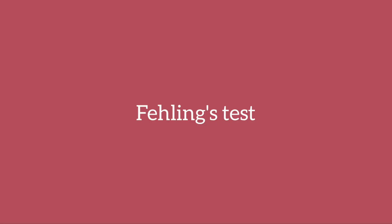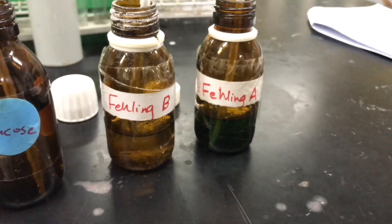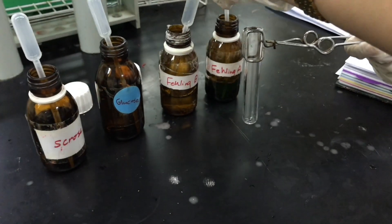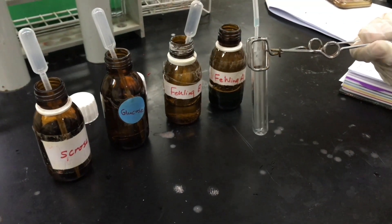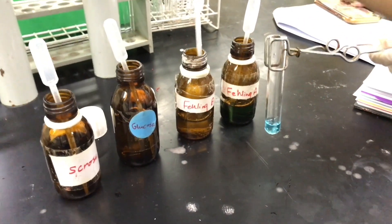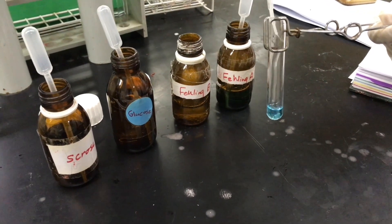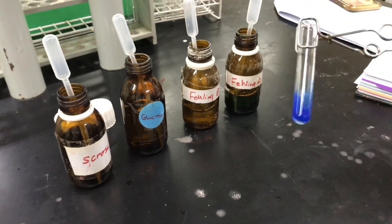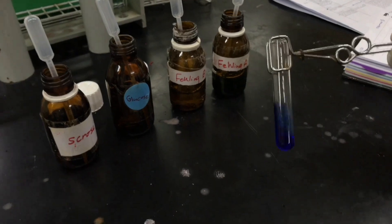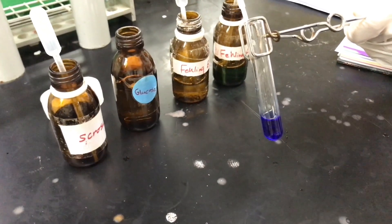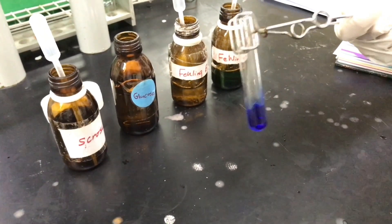Moving on to Fehling's test, which is going to show us the presence of reducing sugar. You're going to need Fehling A and Fehling B solutions, as well as a non-reducing sugar like sucrose and a reducing sugar like glucose. Add one mil of Fehling A solution, then one mil of Fehling B solution — make sure that the amounts are equal. Shake well, then add a few drops of glucose, which is a reducing sugar, and shake well.